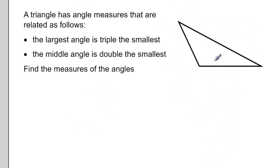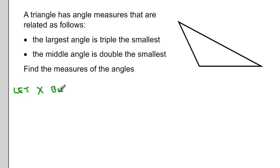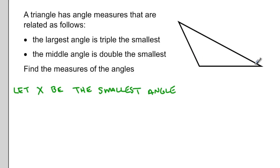One last question to finish off this video — a word problem. A triangle has angle measures that are related as follows: the largest angle is triple the smallest, and the middle angle is double the smallest. You want to find the measures of the angles. So I'm going to start by letting variable x represent the smallest angle. And I've drawn a triangle to help me out here — I'm going to label one of the angles x.